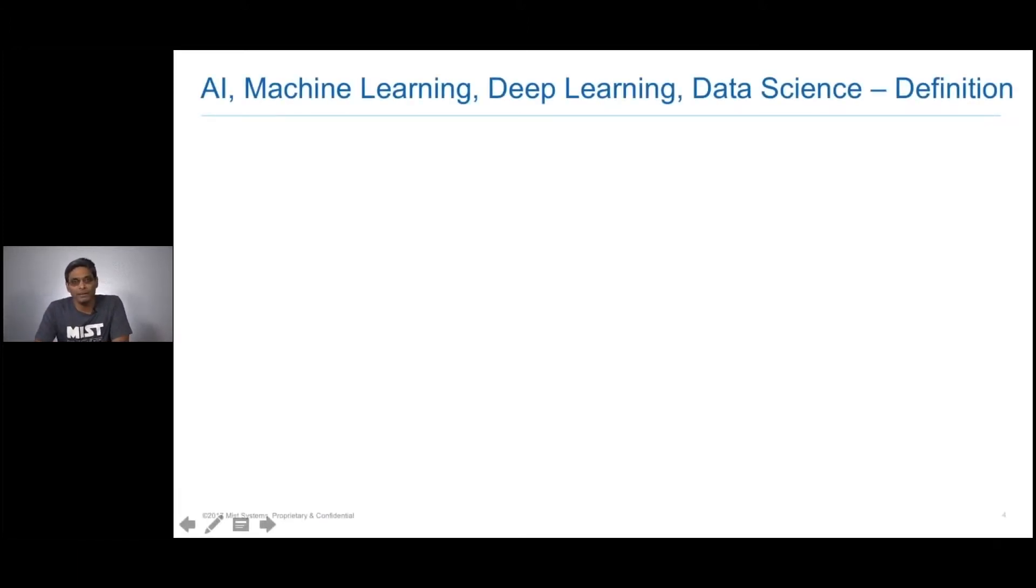AI, machine learning, deep learning, and data science are very interesting different terms, and they all represent different things. We first need to set a level set on the baseline of what these definitions are.